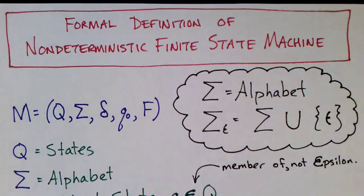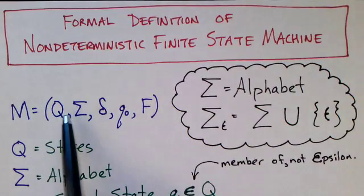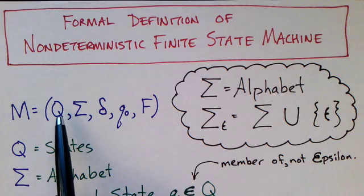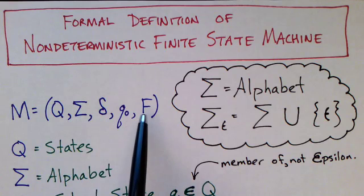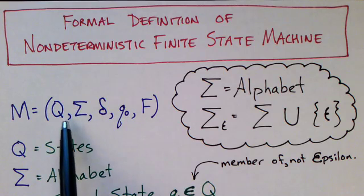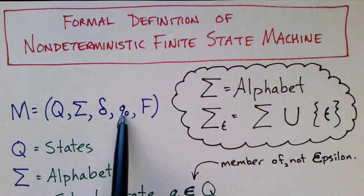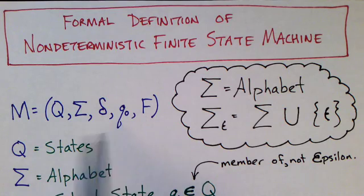We're now ready for the formal definition of non-deterministic finite state machines. As in the case with determinism, we specify them with a quintuple, a collection of five things. But these things are slightly different. We have states, alphabet, transition function, initial state, and final states. But these are slightly different in their definitions. And we'll look at those next.